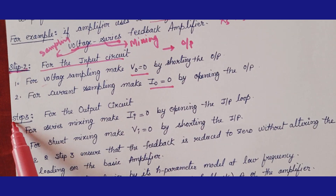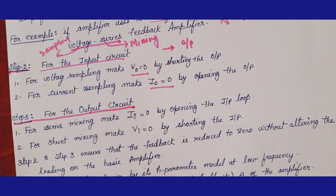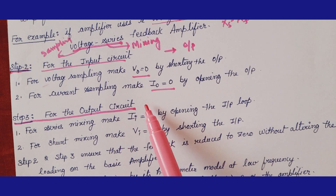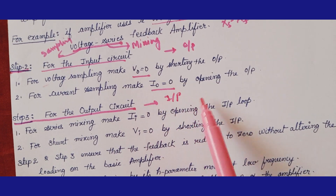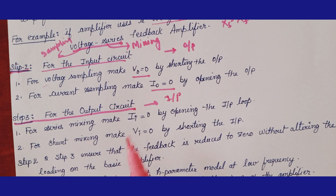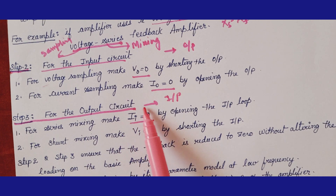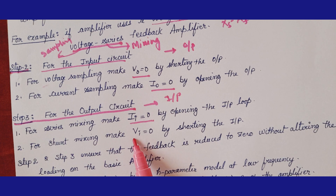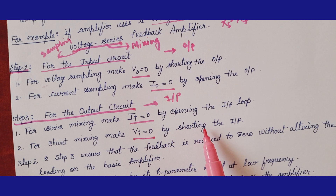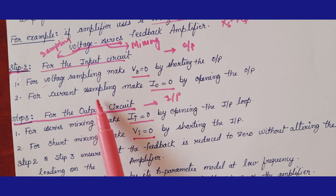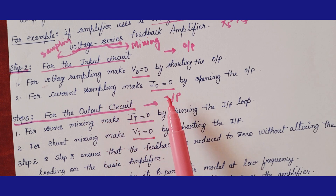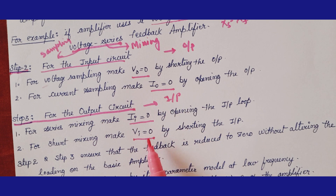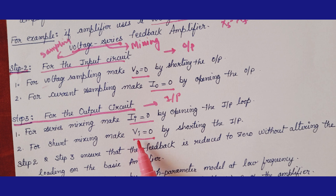For the third step — the output circuit — you need to go to the input side and make arrangements there. For series mixing, make I_i = 0 by opening the input loop. For shunt mixing, make V_i = 0 by short-circuiting the input.